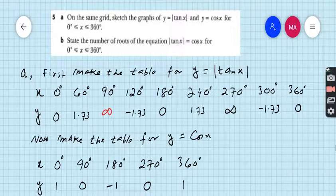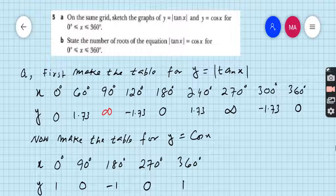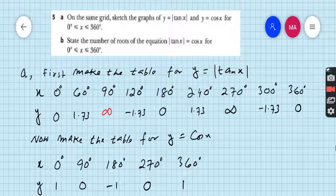Question number 5: On the same grid sketch the graphs of y equals absolute value tan x and y equals cos x for the domain 0 through 360 degrees.